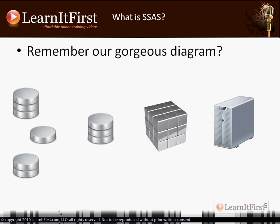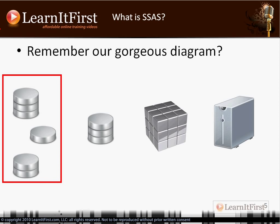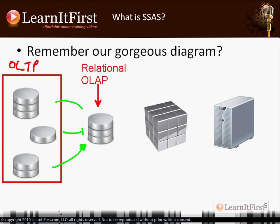Remember this diagram, because we're going to work with this as our paradigm for the rest of the chapter. On the left we had our OLTP systems, then our relational OLAP — that was stored in SQL Server, our relational data warehouse. And what was the tool we were going to use to feed the relational data warehouse? We use SSIS to do the ETL process — extract, transform, and load. So we load the data warehouse using SSIS.